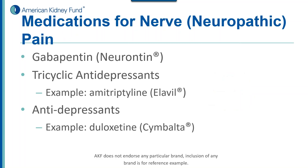There are medications specifically for nerve pain. Gabapentin is a very common one that many of you may be familiar with — it's used for diabetic nerve pain, shingles, and other neuropathic pain. There are also tricyclic antidepressants — though you might wonder why you'd need an antidepressant, they actually decrease pain perception. The one I commonly use is amitriptyline. Then there's duloxetine — you may have seen commercials saying 'depression hurts' — which also has ability to decrease perception of pain and is used by pain specialists, particularly for patients with significant pain related to depression as well.